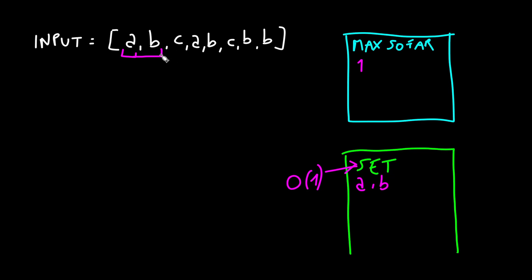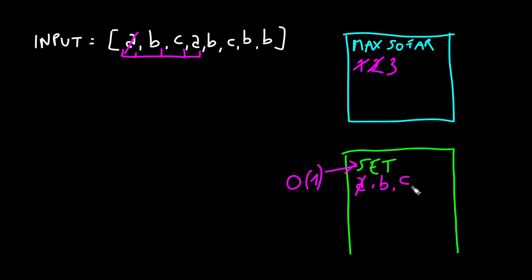The substring has unique characters and is of length two. We add the next character 'c' — it's not in the set, so we add it and the maximum is now three. Next we add 'a', but 'a' is already in the set, so we pull from the beginning of the window, removing 'a' and adding the new 'a'. The max remains three. Next we want to add 'b'.